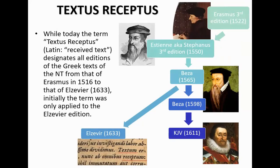I want to point out to the King James only advocates: they'll talk about the Textus Receptus — the received text — but it's a bit of a misnomer. Erasmus's third edition was used by a man called Estienne, then by Theodore Beza, who was John Calvin's successor, who adapted and made changes. Beza's document was then used by Elzevir, and that is where the term Textus Receptus actually came from — it had nothing to do with the KJV originally. But nowadays people refer to this whole family as the Textus Receptus, almost as if God gave this text to Erasmus from heaven — which wasn't quite the case.